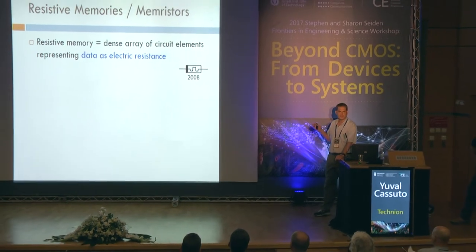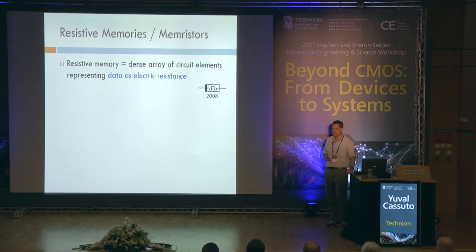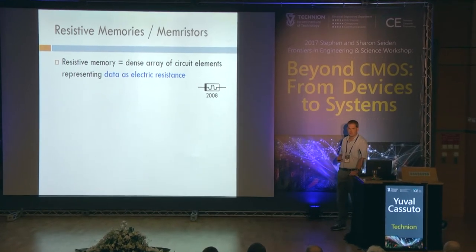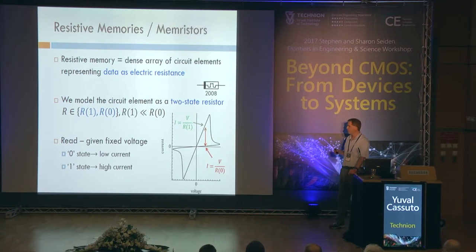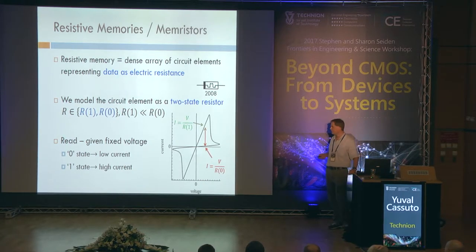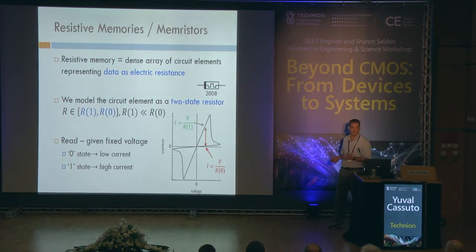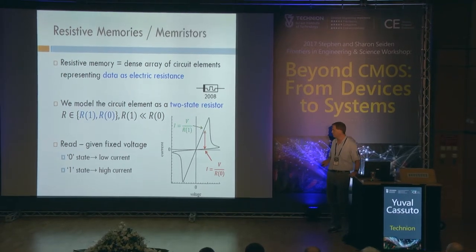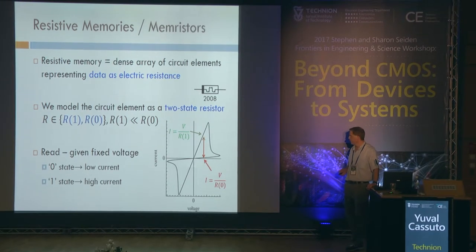We are talking about resistive memory — the resistive element, the memory store. The simplest abstract view of that resistive element is a resistor with one of two states: R1 is high resistance, R0 is low resistance. Readout is very easy: we apply a voltage, if it's in zero we see low current, if it's in one we see high current. A very simple and useful element.